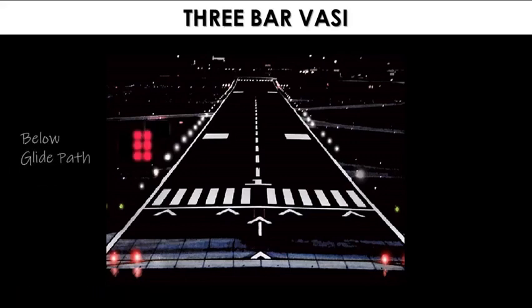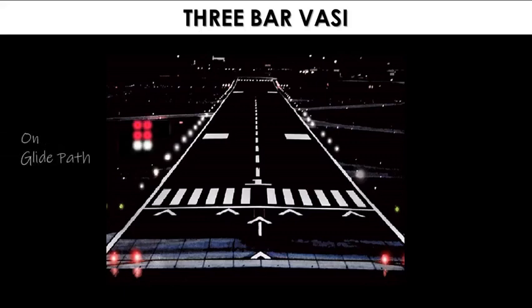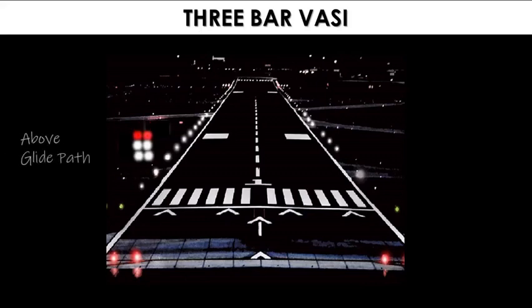This is the 3-bar VASI system. If you observe all 3 red bars, you are below the approach slope. If you observe 2 red bars over white bars, you are on the correct approach slope. If you observe 1 red bar over 2 white bars, you are high — above the approach slope.